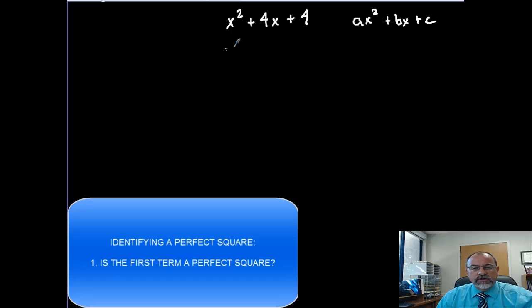So the first thing you want to look for is, is this first term a perfect square? Can I take the square root of this leading term and get an even term or an even number? And I can because the square root of x² is x. x times x is x².